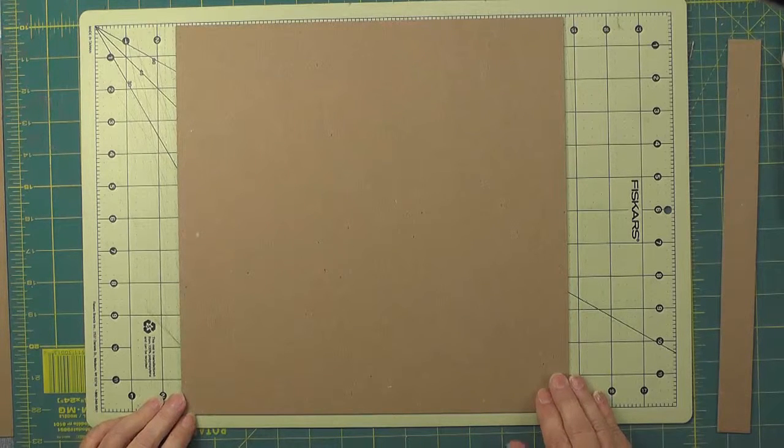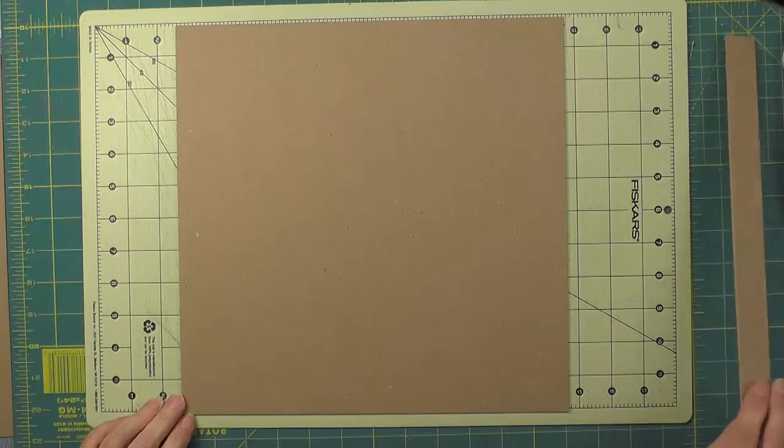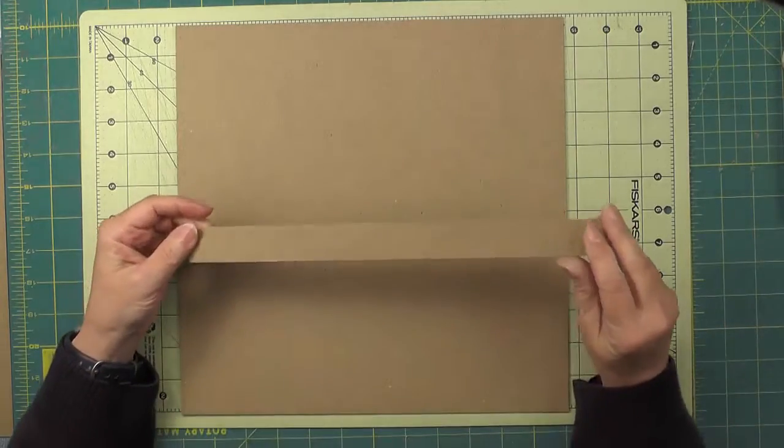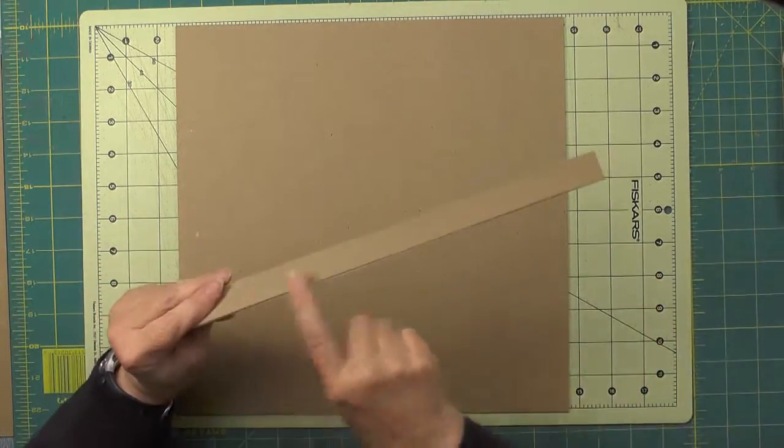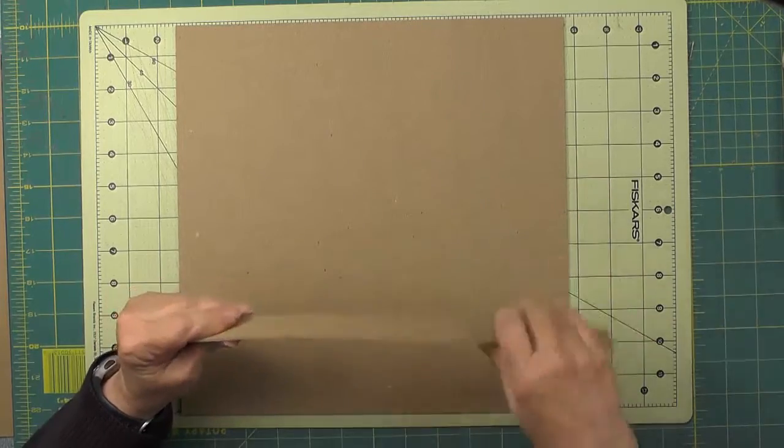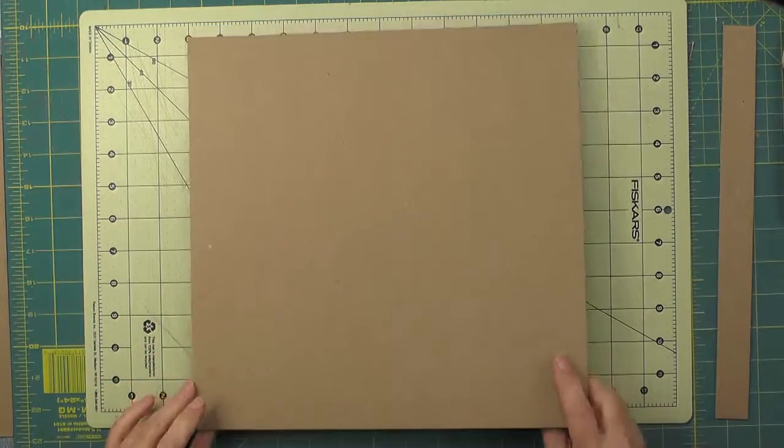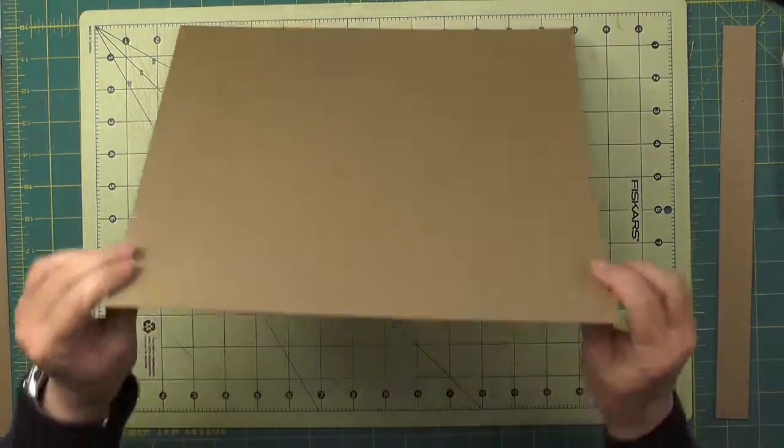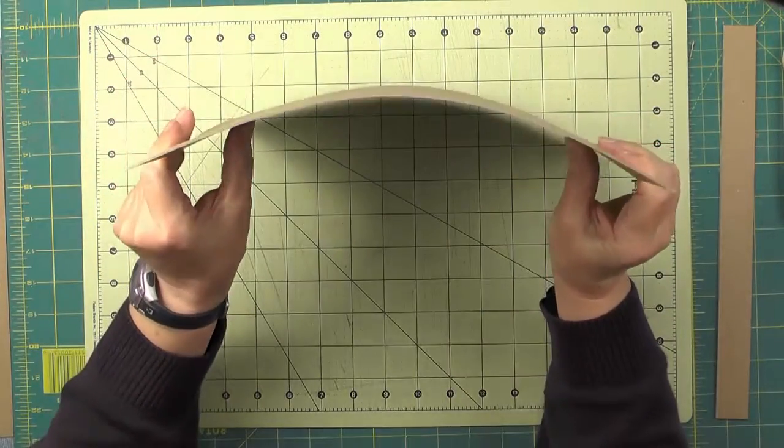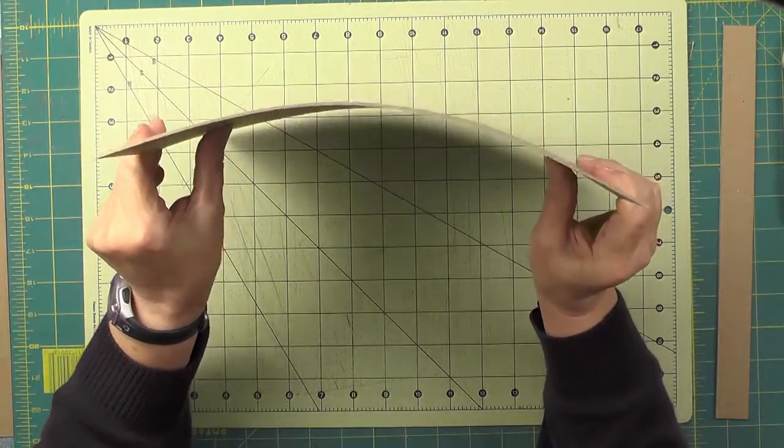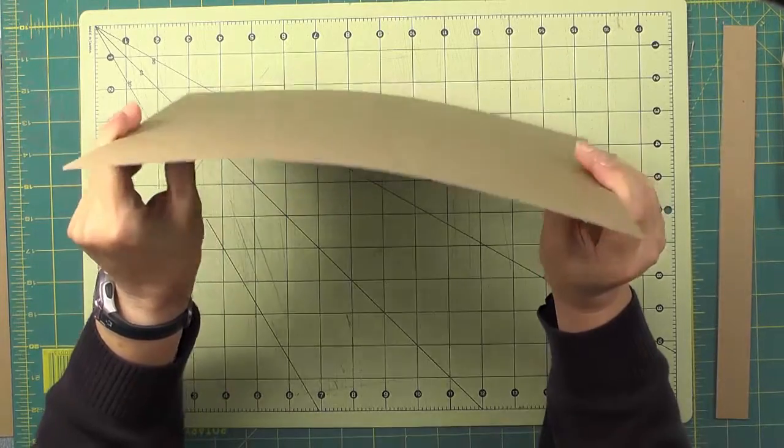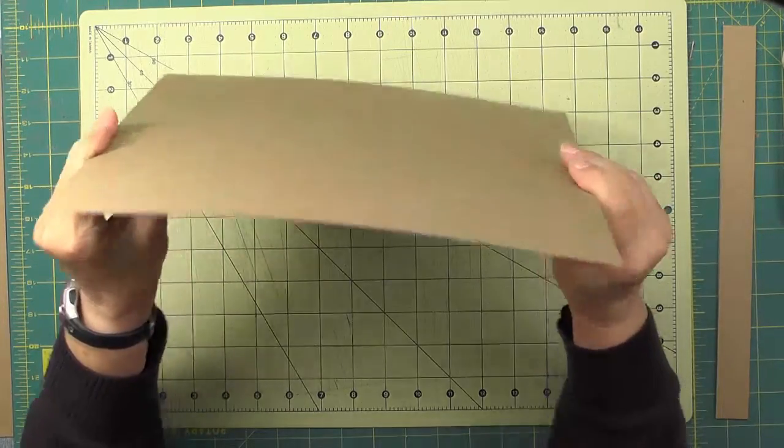I've got two strips that are cut, one by 12, and the stiffness is running this way. I have one of my pieces of 12 by 12 here in front of me, and you can see that I've got it oriented so that the bendable side is facing me.